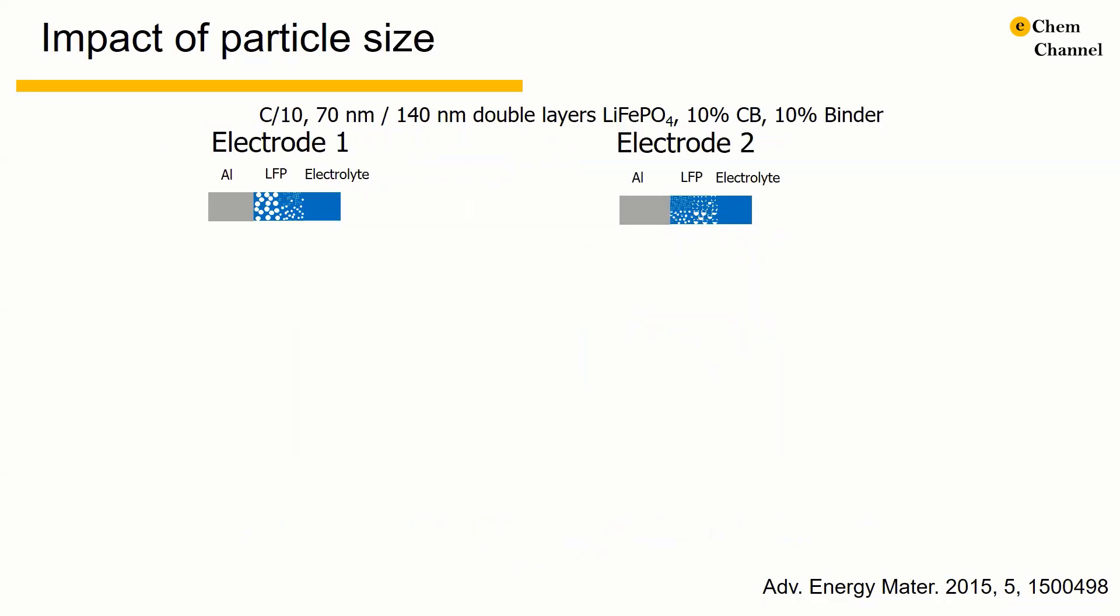Then, the technique is used to observe the impact of particle size on the lithium ion insertion process. There are two situations: Electrode 1 with larger particles loaded near the current collector, and Electrode 2 with smaller particles loaded near the current collector.